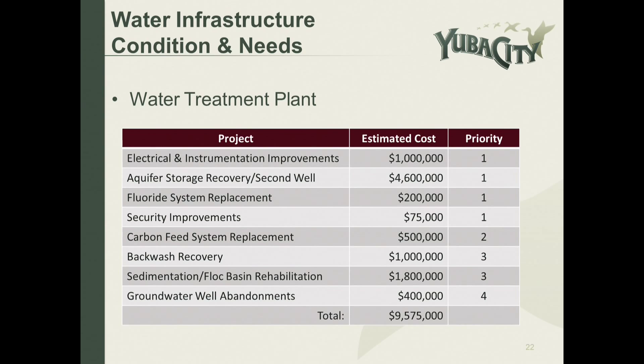Our water distribution system is comprised of 265 miles of transmission and distribution mains. The sizes range from 3 inches to 36 inches, and we have six storage tanks within the distribution system. At the water treatment plant, we've identified some priority projects ranging from priority one to four, including electrical and instrumentation improvements, aquifer storage recovery, a second well, fluoride system replacements, security improvements, carbon feed system replacement, backwash recovery, sedimentation floc basin rehabilitation, and groundwater well abandonments. Those total about $9.6 million.